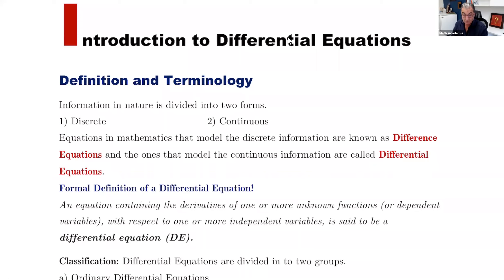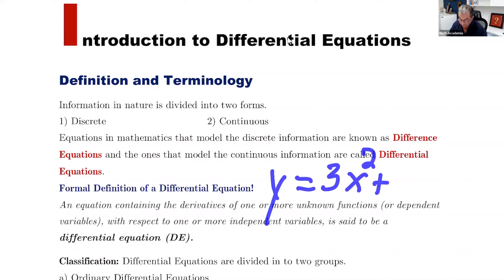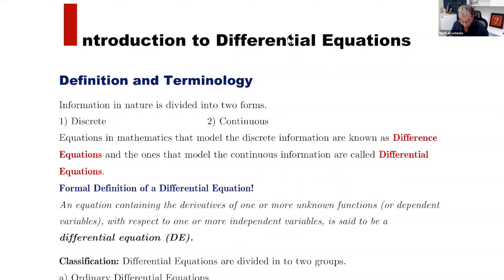What's the definition of a differential equation? An equation containing derivatives of one or more unknown functions — called the dependent variables — with respect to one or more independent variables is said to be a differential equation, or simply DE. For example, if y equals 3x squared plus 1, x is the independent variable and y is the dependent variable.